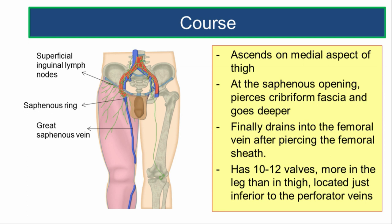The great saphenous vein, as it reaches the saphenous opening, passes through it, piercing the cribriform fascia, and goes deeper. It finally drains into the femoral vein after piercing the femoral sheath. Along its course, the great saphenous vein has 10 to 12 valves, more in the leg than in the thigh, and these valves are located just inferior to the perforator veins.